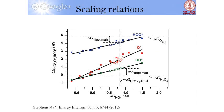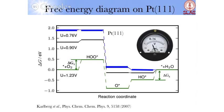But what is even worse is the fact there's a near constant scaling between OOH and OH. These two scale with a distance of about 3.2. And this actually immediately gives you the 0.4 volt limit that we saw. And the equilibrium potential is 1.23.